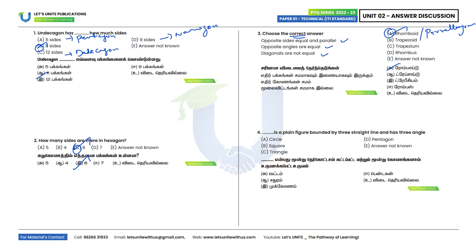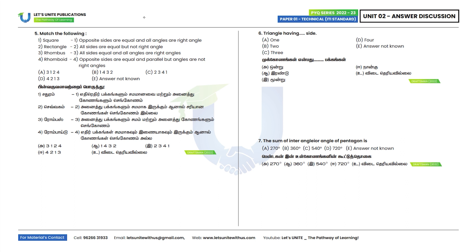Fourth question: A plane figure bounded by three straight lines and having three angles — this is a triangle, so Option C is the correct answer. Fifth question, match the following: Square — all sides equal and all angles are right angles. Rectangle — opposite sides are equal and all angles are right angles. Rhombus — all sides are equal but angles are not right angles. Rhomboid — opposite sides are equal and parallel but angles are not right angles. So options 3, 1, 2, 4 — Option E is the correct answer.